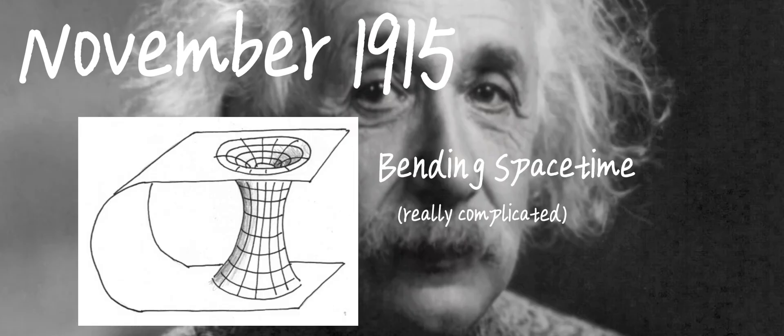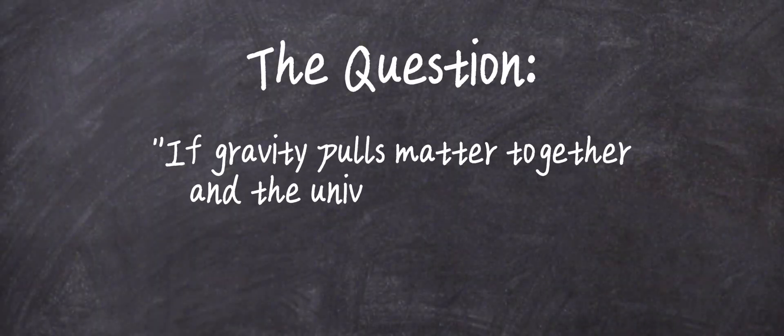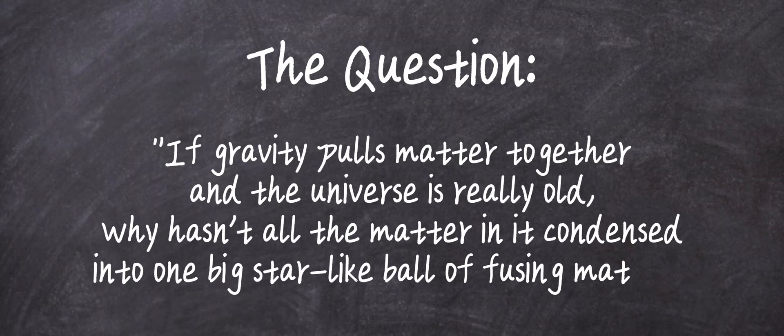With staggering applications and predictions, Einstein's model of gravity became his most celebrated work. But with it came a burning question Einstein found he couldn't ignore. If gravity pulls matter together, and the universe has been around for a really long time, which indeed it has, why hasn't all the matter in the universe long ago condensed into one big star-like ball of fusing matter?